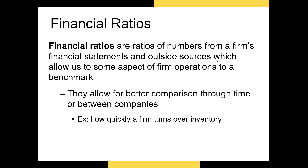This leads us to our discussion of financial ratios. Ratios in finance take numbers from a firm's financial statements and other sources and allow us to examine aspects of the firm's operations relative to some benchmark. Ratios on their own are frequently hard to categorize as good or bad — they need to be compared to something, such as last year's value, industry averages, or the ratio of a major competitor. Most ratios give a sense of past performance, but some ratios using market data, such as the PE ratio or the market-to-book ratio, are believed to have some predictive ability.